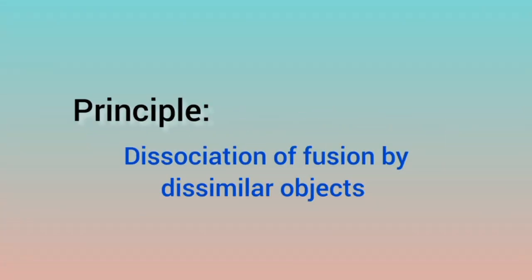The principle of Maddox Wing is dissociation of fusion — we break the fusion by showing the patient dissimilar objects. By presenting two different objects to each eye, we break the fusion. This is done through the components of the Maddox Wing.